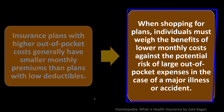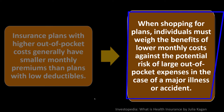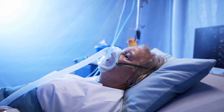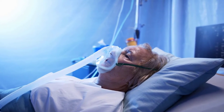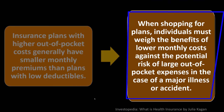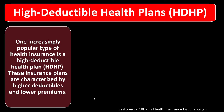When shopping for plans, individuals must weigh the benefits of lower monthly costs against the potential risk of large out-of-pocket expenses in the case of a major illness or accident. We're measuring two things: how much would be covered if there's a major illness versus how much we pay for the more common preventative type of care, and how important that preventative care is to us at this point in time.